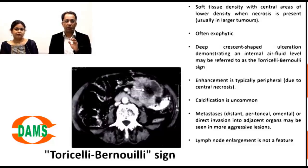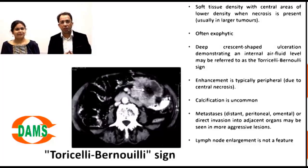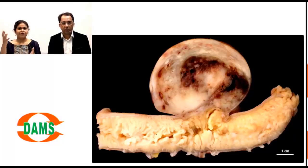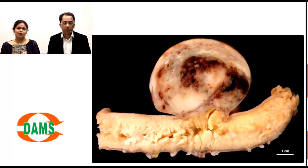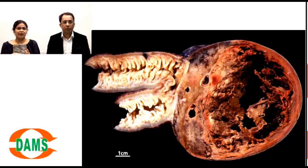Moving to the gross pathology photograph, you can clearly see a bowel loop with a tumor arising from the wall — not from the mucosa — consistent with what we saw on CT. It is exophytic, arising as a submucosal or subserosal lesion. On the cut section you can appreciate reddish-black hemorrhagic areas and yellowish areas. In larger tumors, extensive necrosis and hemorrhage can create an almost cavitary appearance.